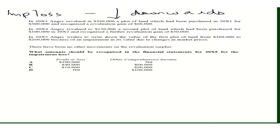Read the question: In 20X3, Angry revalued a plot to 360,000, which had been purchased in 20X1 for 300,000, recognising a revaluation gain of 60,000. In 20X4, Angry revalued a second plot of land to 130,000, which had been purchased for 100,000 in 20X2, recognising a further revaluation gain of 30,000.